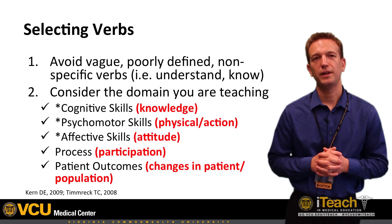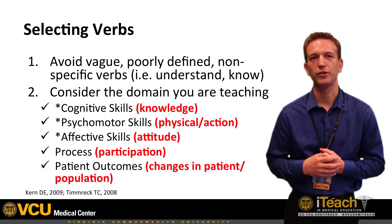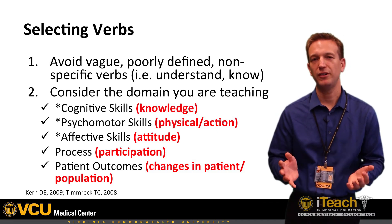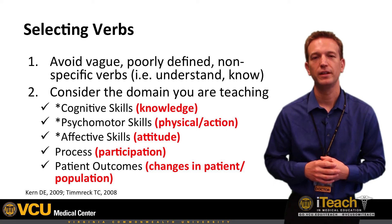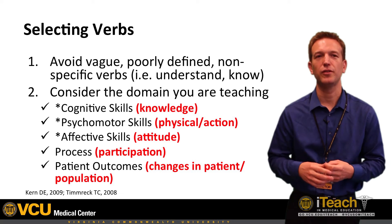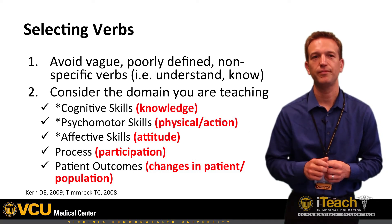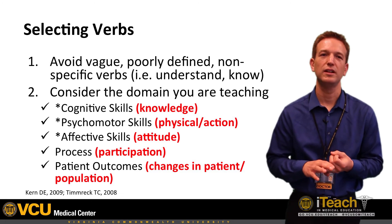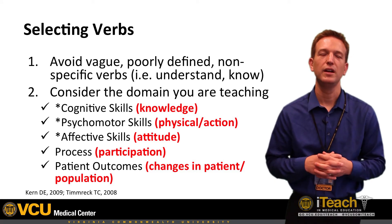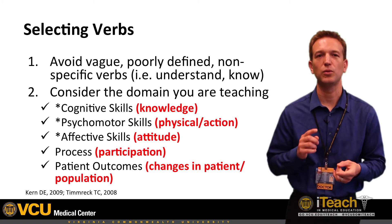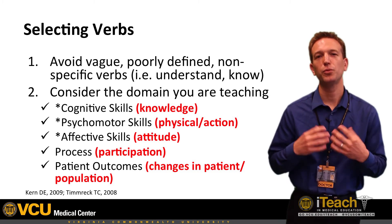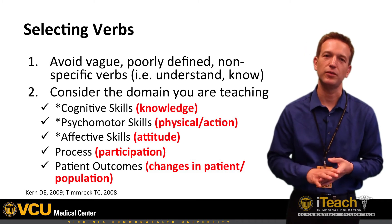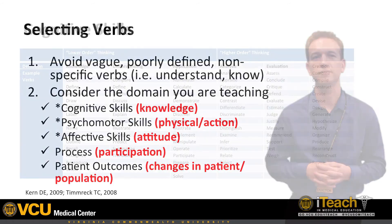One of the most difficult aspects of creating an effective learning objective involves our choice of verbs. It's generally recommended to avoid non-specific verbs such as 'understand' or 'know' because they tend to be less measurable and open to multiple interpretations. Instead, it's recommended to use very specific verbs which relate to the domain you are teaching. There are three commonly used domains: cognitive skills or knowledge, psychomotor skills or actions, and affective skills such as attitude. An effective set of course objectives should generally include at least one objective from each of these domains. Less common domains include process — essentially participation — and patient outcomes, which involves a change in a patient and/or population.